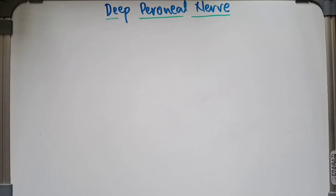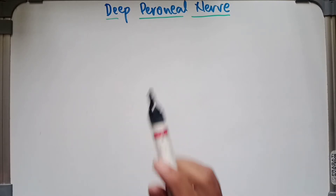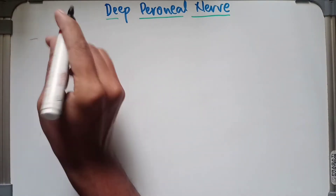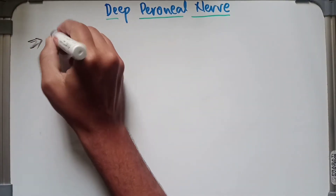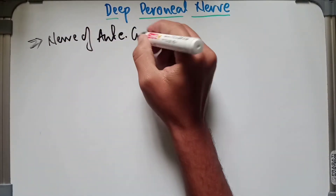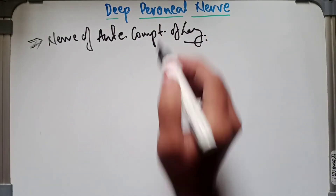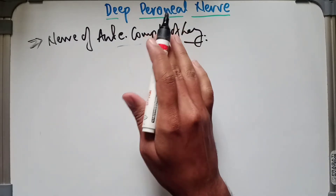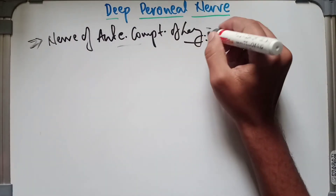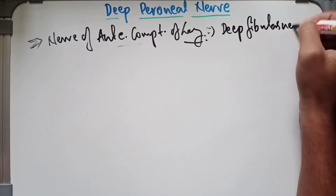Hello guys, welcome back. In this video we are going to learn about the anatomy of the deep peroneal nerve in terms of origin, course, relations, and branches. The deep peroneal nerve is the nerve of the anterior compartment of the leg — it supplies the anterior compartment of the leg as well as the dorsum of the foot. It corresponds to the posterior interosseous nerve of the forearm and is now renamed as the deep fibular nerve.